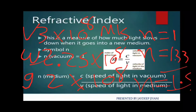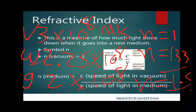So we have three refractive index values: vacuum has a refractive index of 1, water has a refractive index of 1.33, and glass has a refractive index of 1.5.